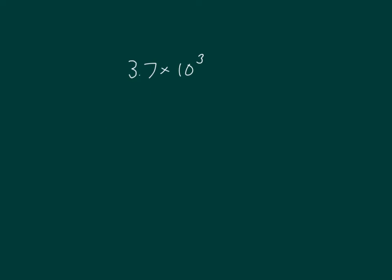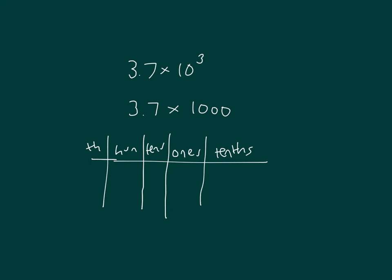Here we have a decimal number times 10 cubed. So that's 3 and 7 tenths times 1,000. We could use our place value chart to help us. Here's our number and our place value chart, multiplying by 1,000. Each of those 1's is now worth 3,000. So we have 3,700.